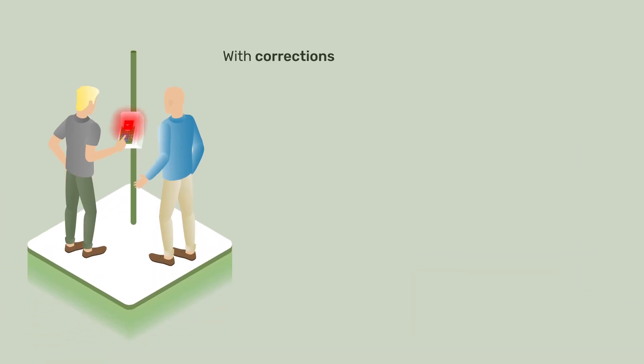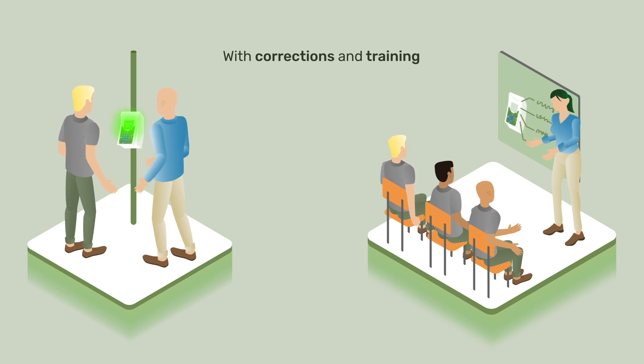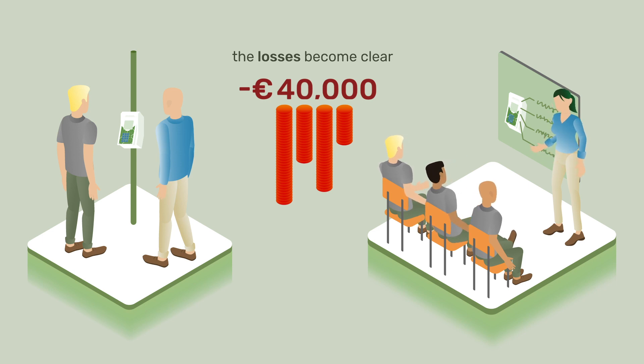With added data correction work done by labor managers and time invested in training of new employees in the registration system, the cost for labor registration in a greenhouse like this easily exceeds 40,000 euros each year. This can, and should, be done more efficiently.